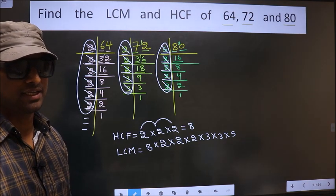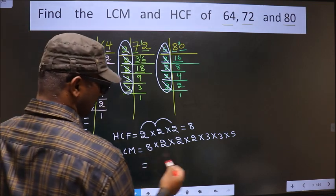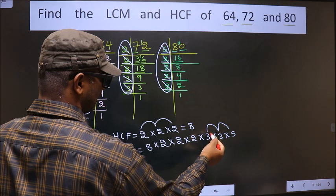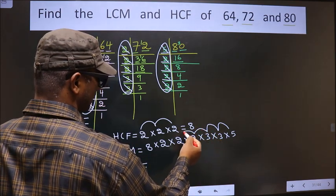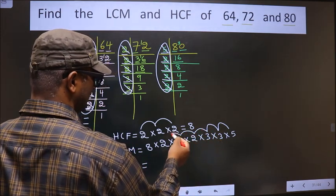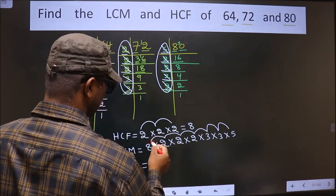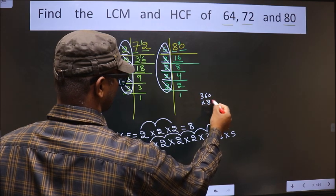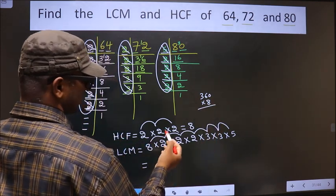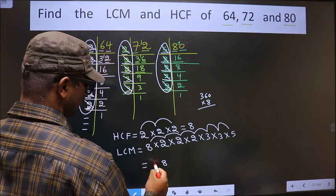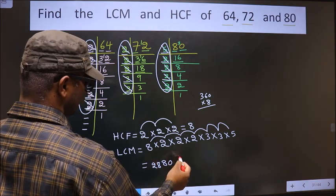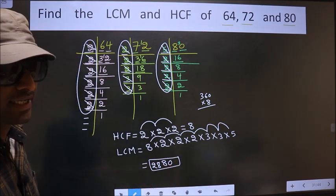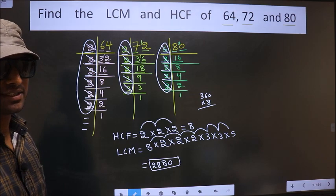So let us multiply: 5 times 3 is 15, times 3 is 45, times 2 is 90, times 2 is 180, times 2 is 360. 360 times 8: 8 times 6 is 48, 8 times 3 is 24 plus 4 is 28, giving us 2880. So 2880 is our LCM and 8 is our HCF.